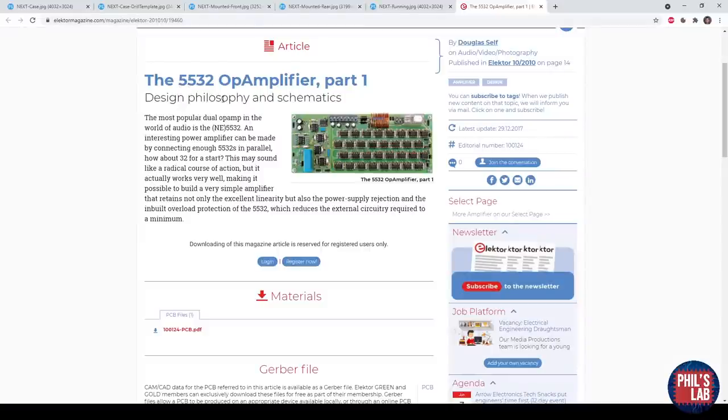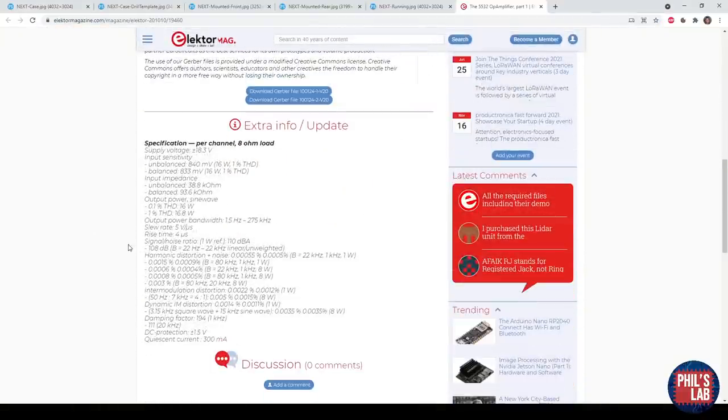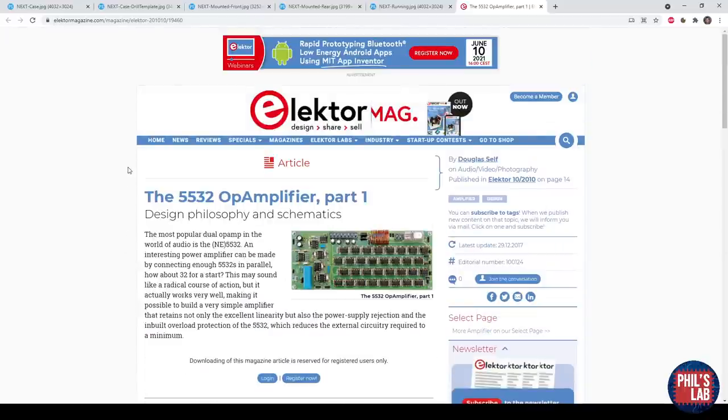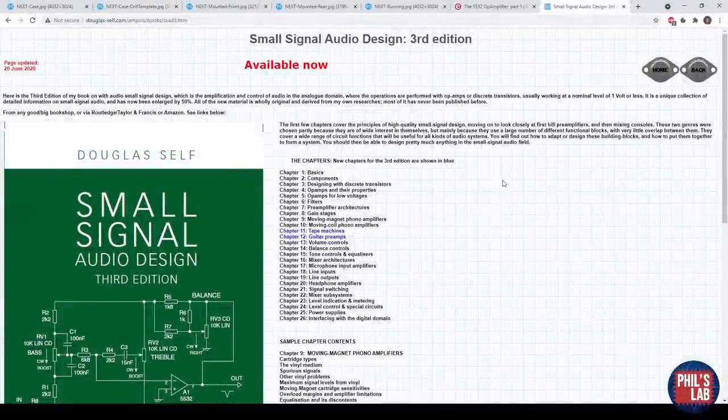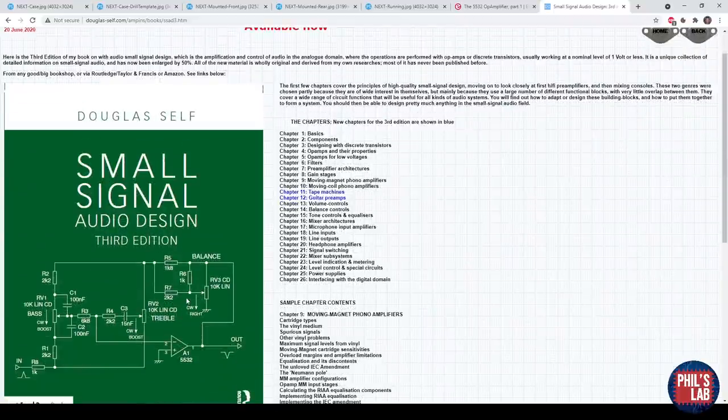Here's the NE5532 power amplifier I mentioned by Douglas Self. You can find it at Elektor magazine and I believe you can also look at the Gerber files and some of the specifications of this amplifier, so I recommend you have a look at that because that's how I got inspired to make this headphone amplifier. I can really recommend Douglas Self's books in general, in particular the Small Signal Audio Design book. A really great book and definitely well worth the money.